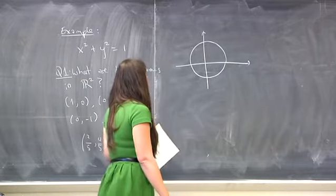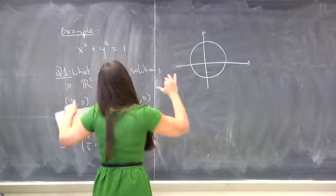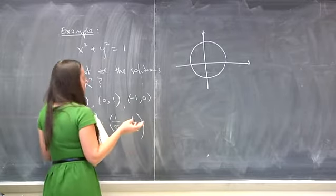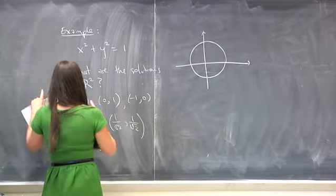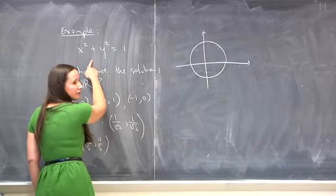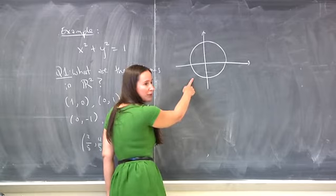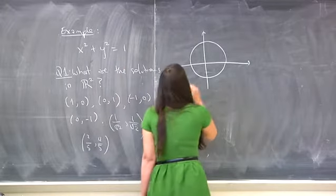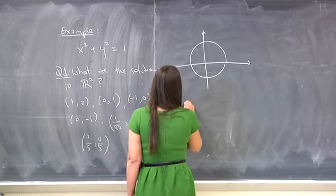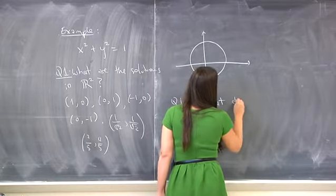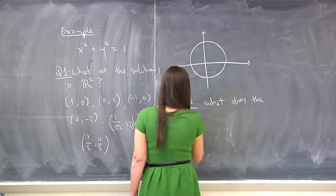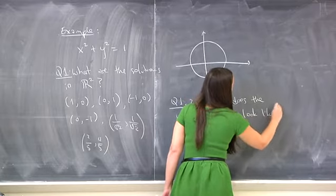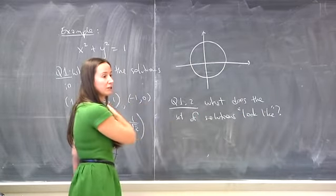So that's almost a circle and almost centered at zero, but believe me it is. This is my meta-example for everything in arithmetic geometry: there's a question about numbers that makes a lot more sense when you talk about the geometry. So Q1.2 is: what does the set of solutions look like? Sometimes this question makes more sense than the purely numerical one.